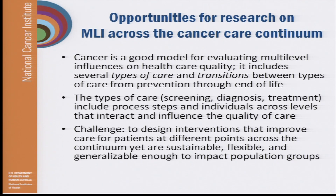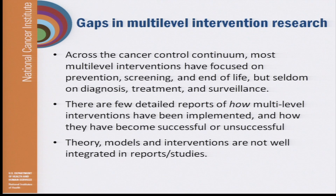The challenge, brought up in paper three, is to design interventions that improve care for patients at different points across the continuum — interventions that may be very different for each individual patient, yet are sustainable, flexible, and generalizable enough to impact population groups. From the literature review in paper three, across the cancer control continuum, most multi-level interventions have focused on prevention, screening, and end of life, but seldom on diagnosis, treatment, and surveillance.